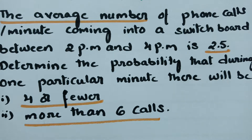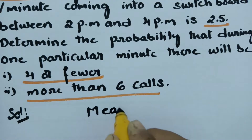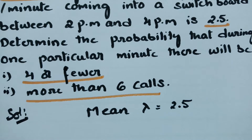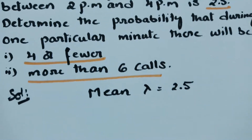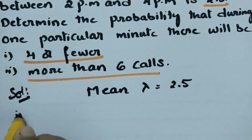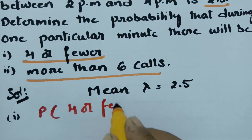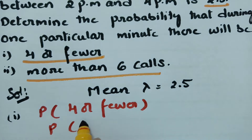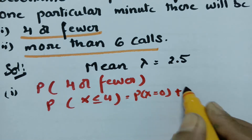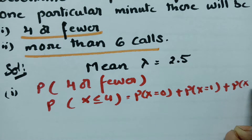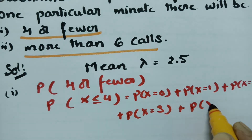The mean lambda is given as 2.5. We have to find the probability that during one particular minute there will be four or fewer calls. Four or fewer means probability of x less than or equal to 4, which equals P(x=0) + P(x=1) + P(x=2) + P(x=3) + P(x=4).